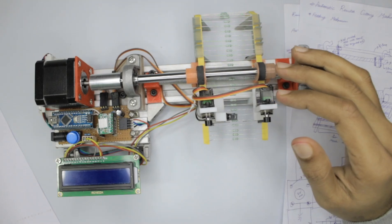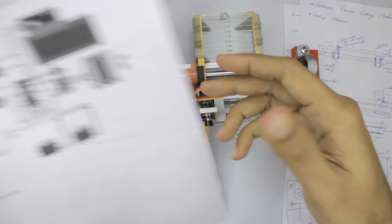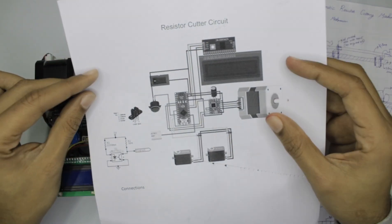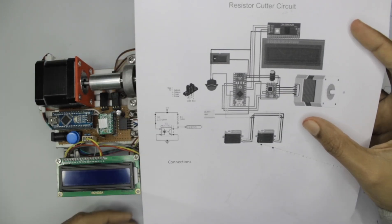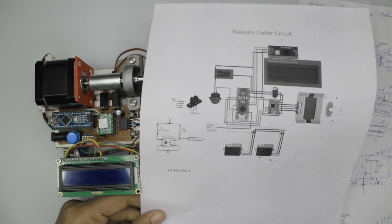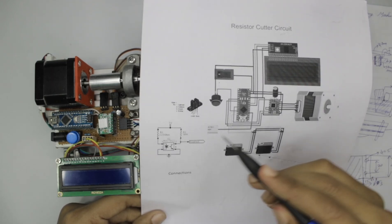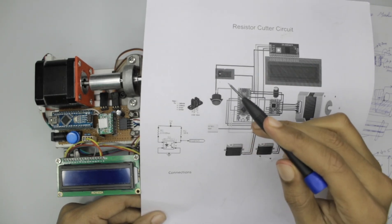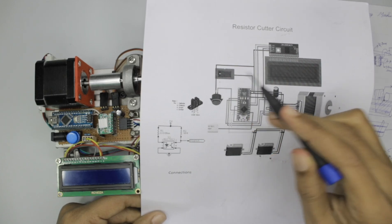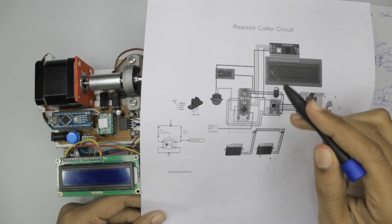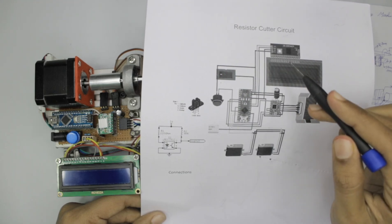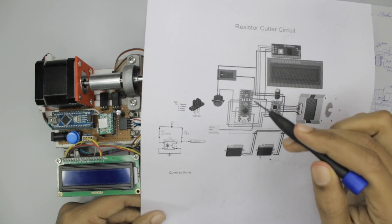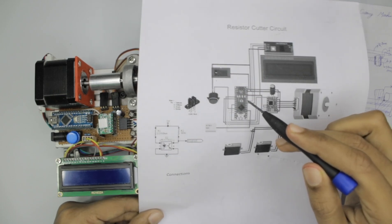This is the complete circuit diagram for our project and everything is pretty simple. We will be using a 12 volt 2 amps adapter to power everything up and then this LCD will show us all the required information. We have an I2C display module to interface it with the Arduino Nano.